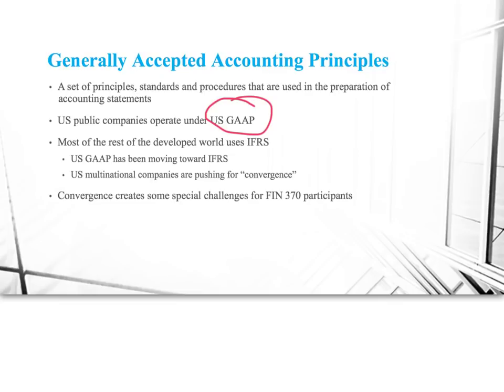We are in the process of moving towards international standards through a process called convergence. It's not because people decided one morning that it would be nice to be like the rest of the world. This is about business and money. The big U.S. multinational companies filing statements in multiple countries and markets around the world have no interest in preparing two sets of statements — one for the rest of the world and one for the U.S. — and so they have been pushing, quite successfully, for convergence.